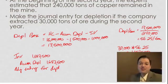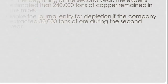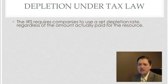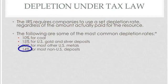Now, one of the fun things about depletion is that the taxes are even weirder for depletion than they are under depreciation. The IRS has decided that companies need to use a set percentage of their sales price to come up with their depletion amount. So instead of figuring out what we paid and dividing it up through MACRS tables, you use a set percentage. Here are some of the most common rates: 10% for coal, 15% for gold and silver in the U.S., 22% for other metals in the U.S., and 14% if it's outside of the U.S. This is our depletion rate as far as the IRS is concerned.